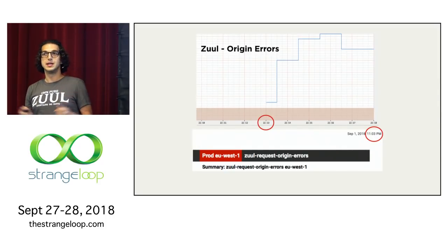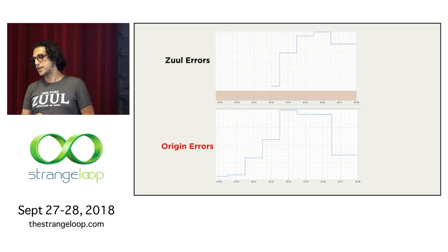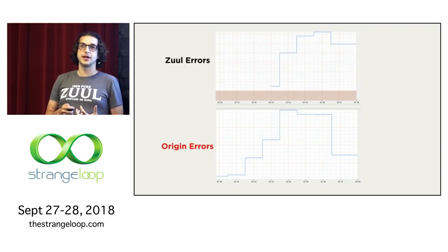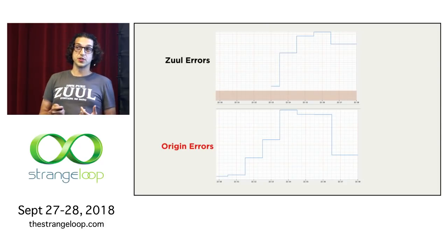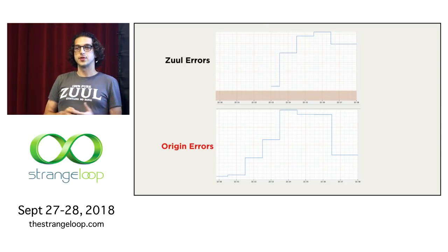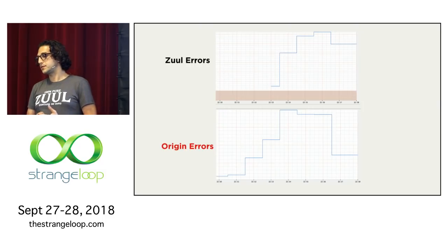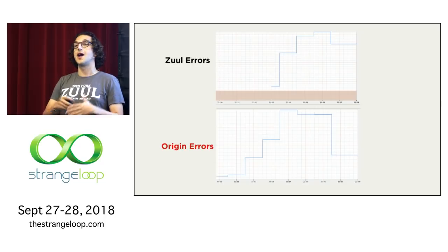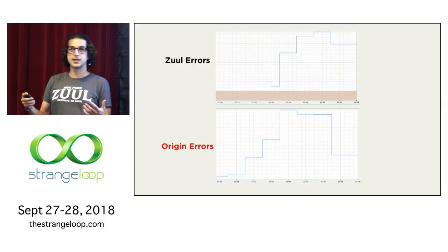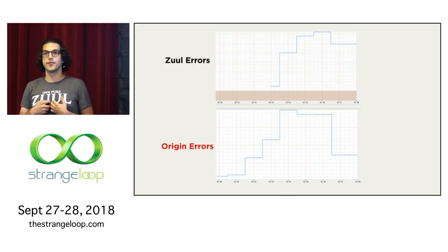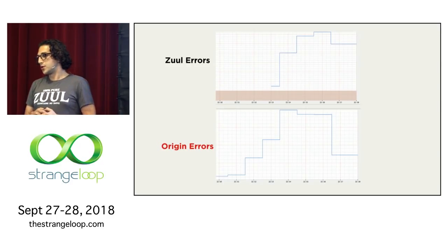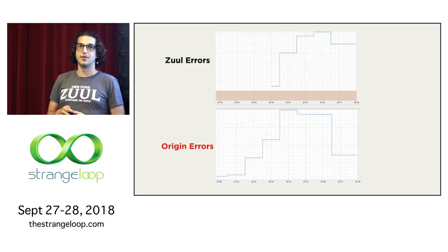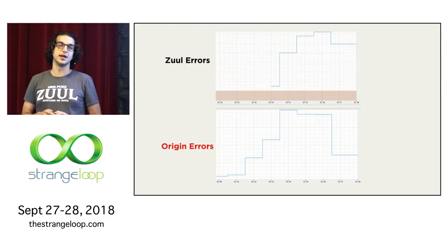A lot can happen in 10 minutes, especially when dealing with massive scale. Another problem is these alerts would only be specific to our service — we'd only get alerts for Zuul and not for other services that may be having trouble. Since we're at the front door, error rates go up for downstreams, and error rates go up for us. For example, the top graph and the bottom graph are identical: one is Zuul's error rate, the other is a specific origin's error rate.